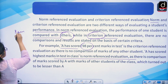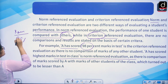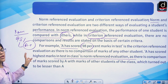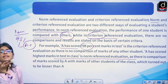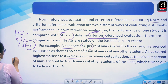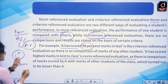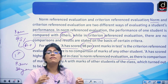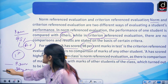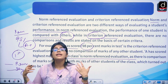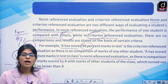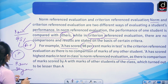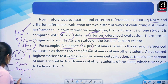For example, Ram scored 98% in the test — that is criteria reference evaluation as there is no comparison with other students. Ram scored the highest marks in the class — that is norm reference evaluation because here Ram is being compared with other students. In criteria reference, percentage is a good example, while in norm reference we have percentile. I am comparing Ram's 98% with Shyam's 96% and giving ranks — that is norm reference.